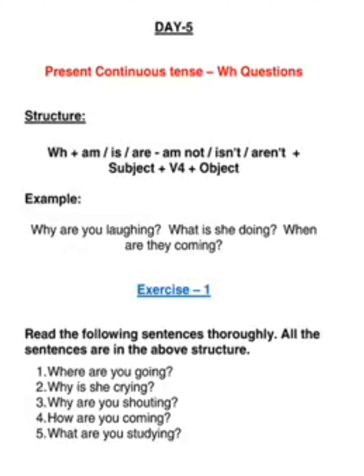Number 2: Why is she crying? Number 3: Why are you shouting? Number 4: How are you coming? Number 5: What are you studying? So you see, you get the WH first, immediately you get the helping verb, you get the subject, and you get V-ing.